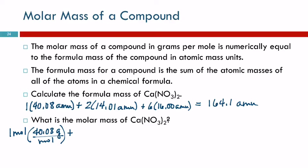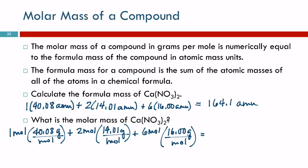And in this compound, there are two moles of nitrogen. So two moles of nitrogen, and nitrogen is 14.01 grams per mole. And there are six moles of oxygen, and oxygen is 16 grams per mole. Those mole units all cancel out. You can do that on your calculator. You're going to come up with 164.1 grams.